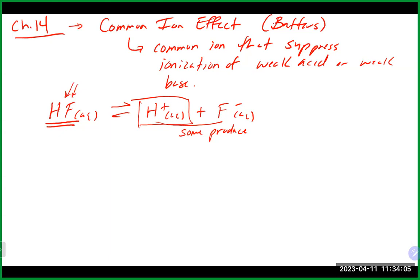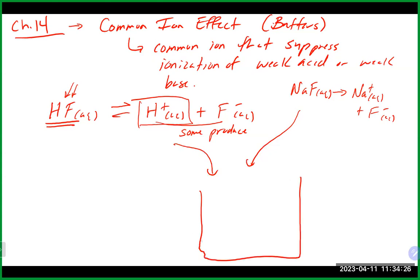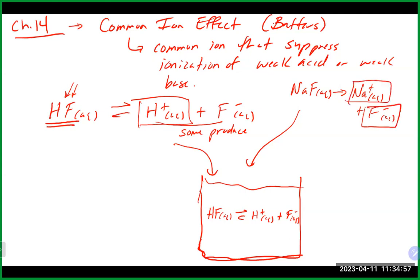Now, if we took hydrofluoric acid and added some sodium fluoride to it — sodium fluoride being a strong electrolyte will 100% break apart into sodium ion and fluoride ion in solution. If we dump both of these into a beaker, really only one of them will set up an equilibrium and it's going to be the weak acid. The common ion is going to be the fluoride. Sodium is just a spectator ion.